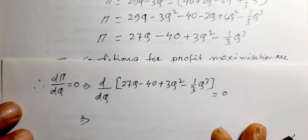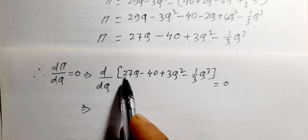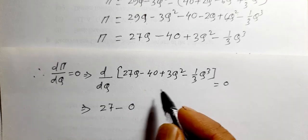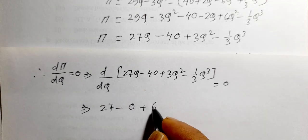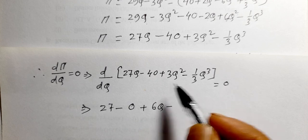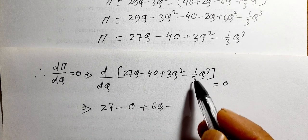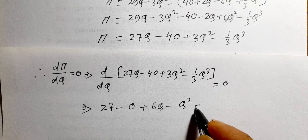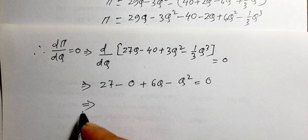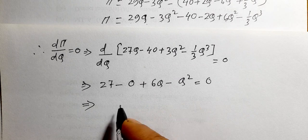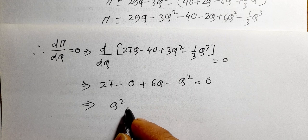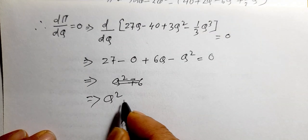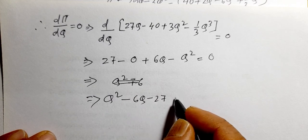After differentiation, differentiating with respect to q: the derivative of 27q is 27, the derivative of 40 is zero since it is constant, the derivative of 4q² gives 8q — wait, that gives us the equation. After differentiating and simplifying we obtain: q² minus 6q minus 27 equals zero.